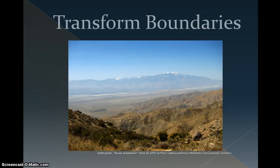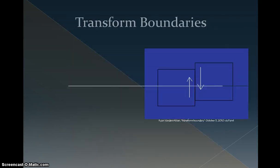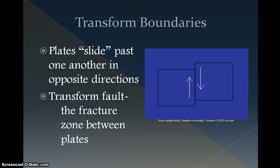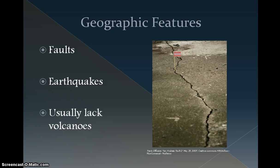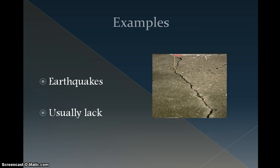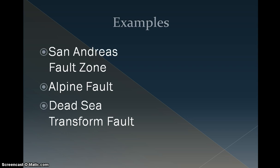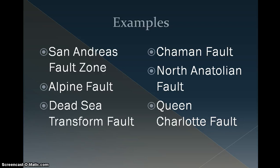The next type of plate boundary are transform boundaries. Transform boundaries take place when two plates slide, or more literally, grind past one another in opposite directions. The fracture zone in between the plates is known as a transform fault. The geographic features found along transform boundaries are faults, like the San Andreas Fault. Reoccurring earthquakes are also very typical along transform boundaries, and unlike other plate boundaries, transform boundaries usually lack volcanoes. Some examples are the San Andreas Fault, the Alpine Fault, the Dead Sea Transform Fault, the Shaman Fault, the North Anatolian Fault, and the Queen Charlotte Fault.